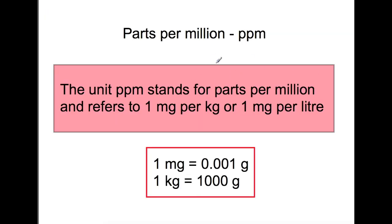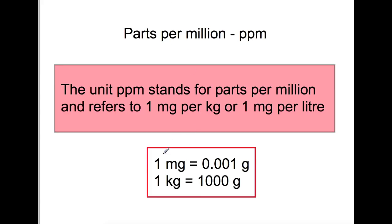The final calculation we're going to look at is parts per million, often used in the pharmaceutical part of the course. The unit ppm stands for parts per million and refers to one milligram per kilogram or one milligram per litre. There are two key conversions: one milligram equals 0.001 grams, so to convert milligrams to grams you divide by 1000, and to go the other way you multiply by 1000.